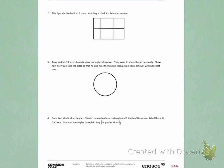This is Module 5, Lesson 5, Homework, Side 2. Number 2. The figure is divided into 6 parts. Are they 6ths? Explain your answer.